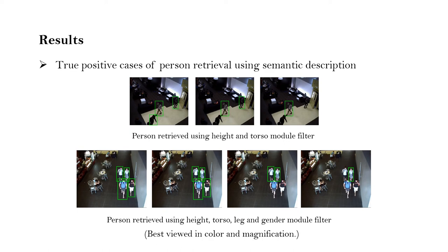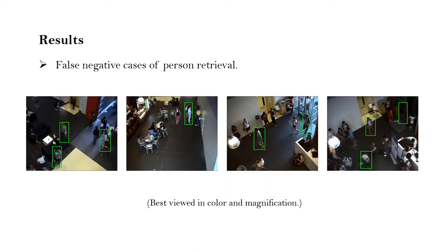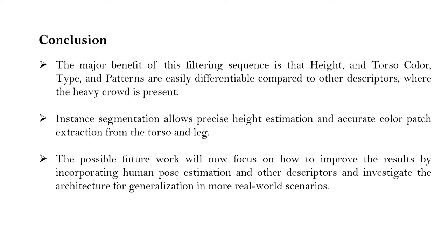We also report the failures of our PERVIS, where for the medium and hard categories the network struggles to find the correct person and provides false negatives at the end, as shown in the images. Thereby, we conclude by mentioning the major benefit of our work.